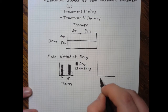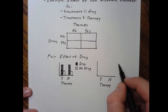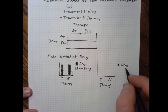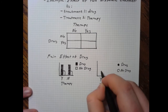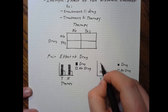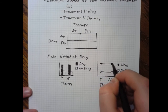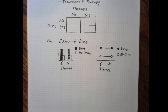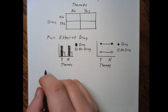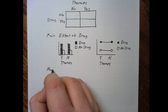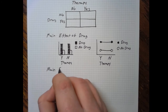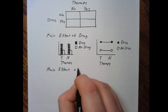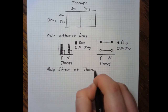We can show this on a line graph as well, with therapy on the x-axis, filled circles for the drug condition and open circles for the non-drug condition. If you're not given the drug, nothing's happening. If you're given the drug, something's happening and you're higher on the graph. You could also have the opposite situation where there's a main effect of therapy, but not the drug.